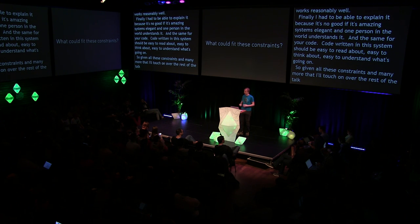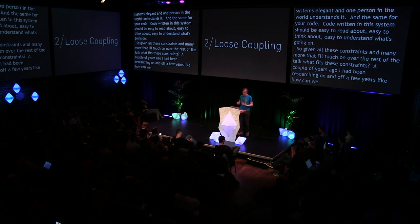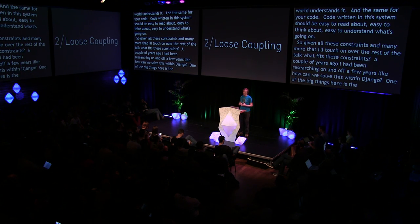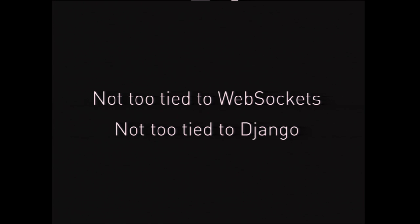Given all these constraints, what fits? The big thing here is the idea of loose coupling. Django used to promote loose coupling as a design pattern. First, it means not being too tied to WebSockets — there's a more general problem with the web not being purely synchronous anymore. It also shouldn't be too tied to Django. Django has been a standalone monolith in the Python community, and it's important to have a solution that's a bit more open and welcoming, so that people from the rest of the Python community — many of whom are better than me at networking — can help.